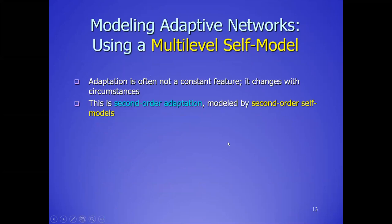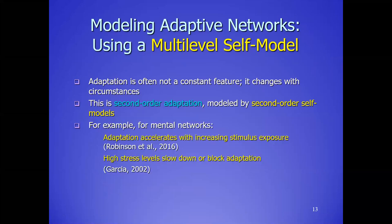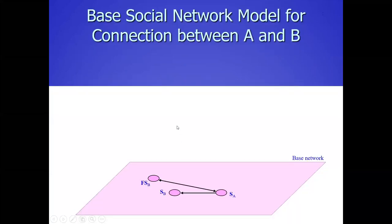Multi-level self-models are used to have higher orders of adaptation, and that can also be addressed for social science examples. For mental networks we had this in the earlier talk, and now I will show how you can apply similar ideas for the social area.